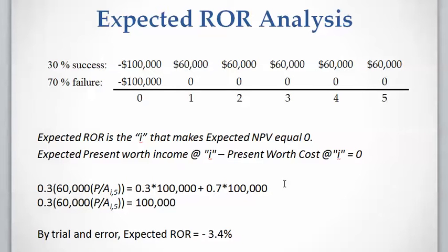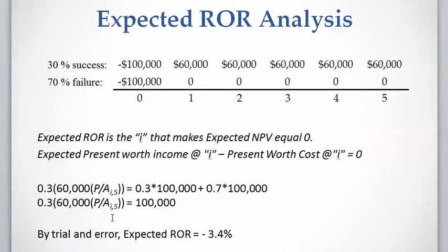On the right-hand side, the expected value of cost is $100,000 multiplied by the probability of success plus $100,000 multiplied by the probability of failure. Because this cost is shared between both cases, the summation of both probabilities equals one, so the cost stays unchanged. Solving this equation for the rate of return gives a value of minus 3.4%.